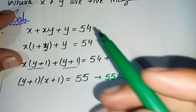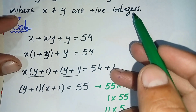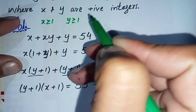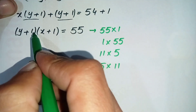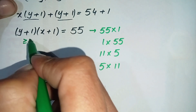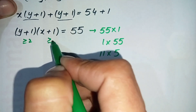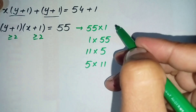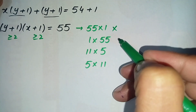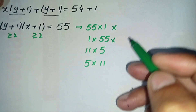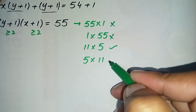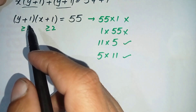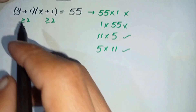Since x and y are positive integers, x ≥ 1 and y ≥ 1. Therefore both (y + 1) and (x + 1) must be greater than or equal to 2. This means the pairs 55 × 1 and 1 × 55 are not valid. The valid pairs are 11 × 5 and 5 × 11, since both values are greater than 2. There are two possible cases.